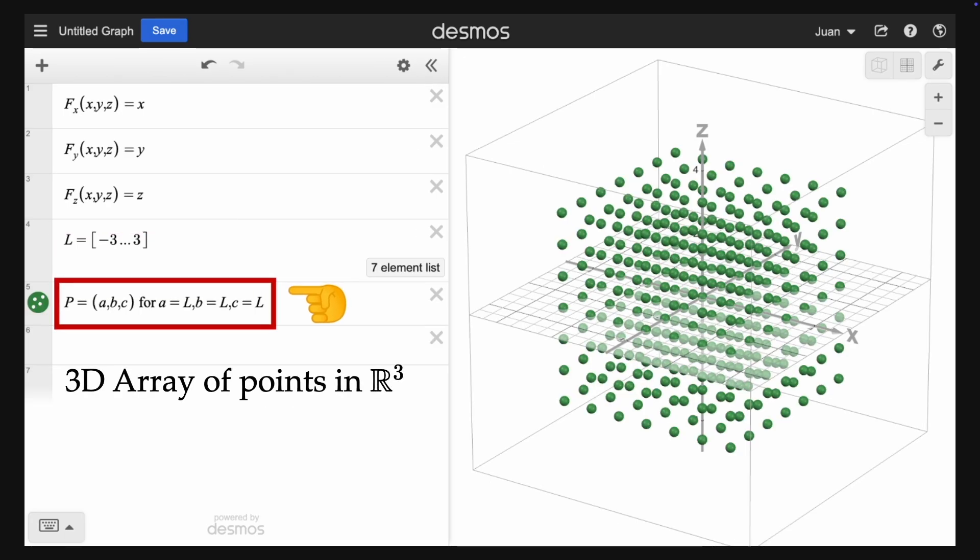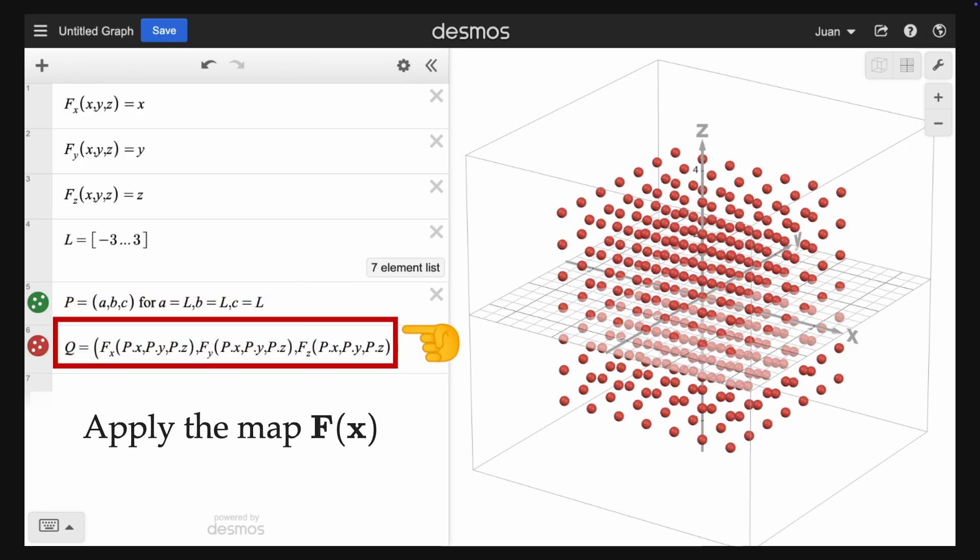Now let's define a 3D array of points in R3. Here we just type P equals brackets ABC for A, B, and C parameters in the list L. To apply the map F, again, we evaluate each component for each value in P, the 3D array.